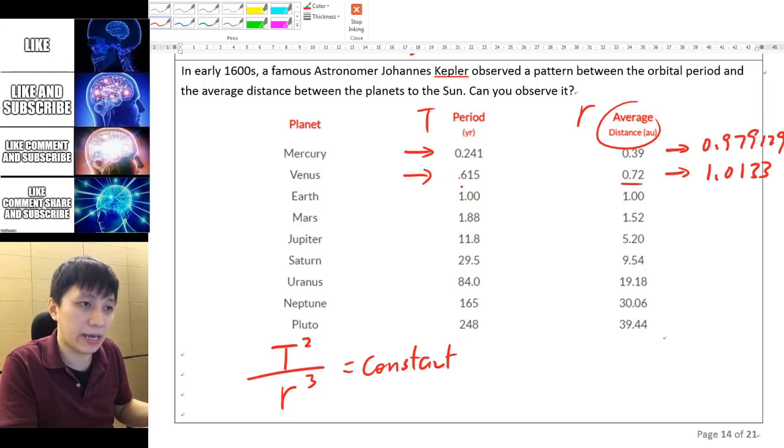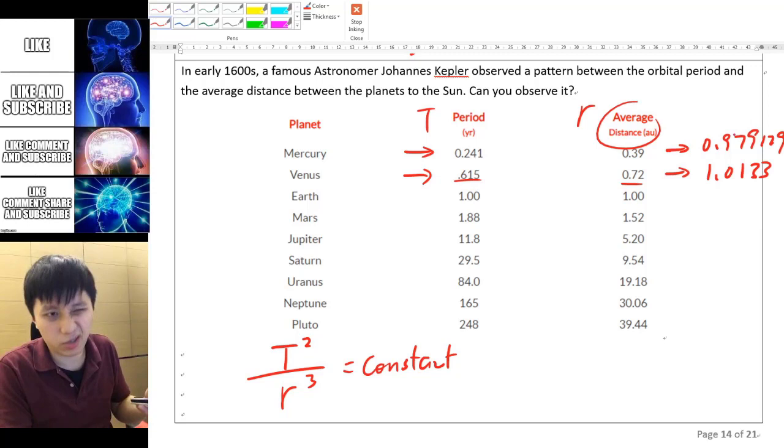I mean, the data itself may contain some sort of absolute uncertainty, so I would say this is pretty good enough. Like think about this, 3 to 4% of uncertainty, I think this is really good already. Well, let's do another one, Pluto. So that's going to be 248 to the power of 2 divided by 39.44 to the power of 3, and again here you get 1.00251. Okay, and so this is a way that we try to verify.